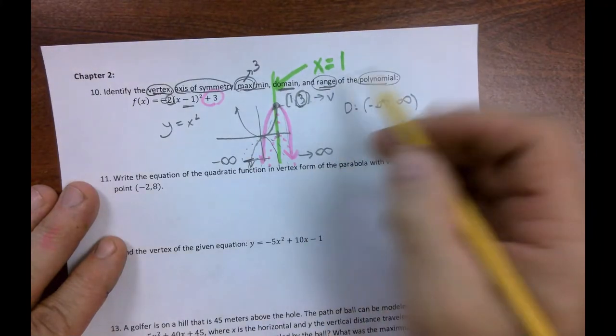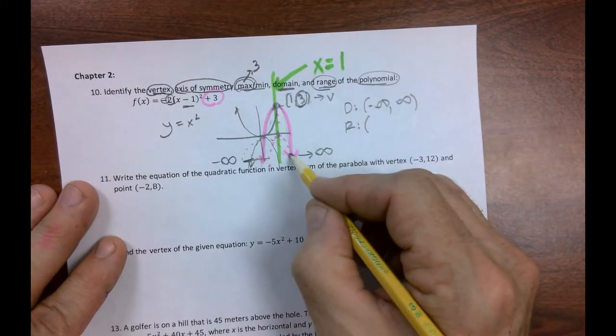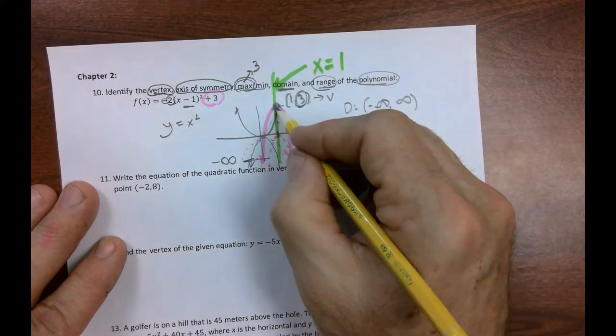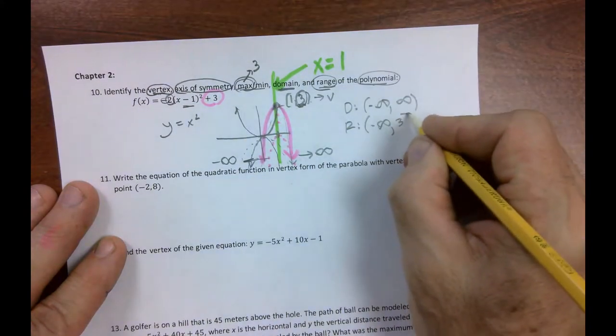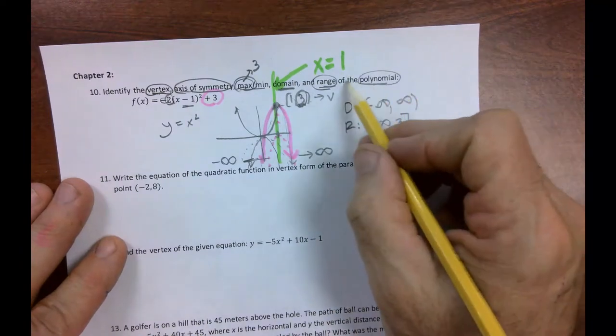What's the range? Well, the range, you always start with how low it goes. Obviously, this is going down forever. So it's negative infinity. How high does it go? It goes up to 3. It's kind of like your maximum value. And that's a bracket because it definitely touches it. And that's it for number 10.